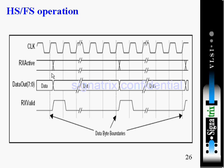From this timing diagram, they are trying to say that Rx active should not change even when Rx valid is going from high to low. It should only change when there is again a transition from zero to one — then only it changes, otherwise it maintains its previous value.